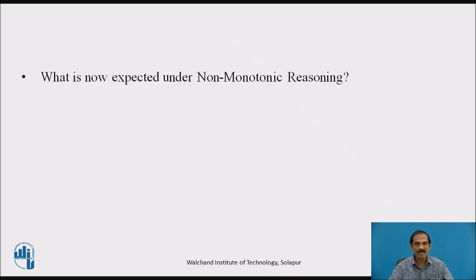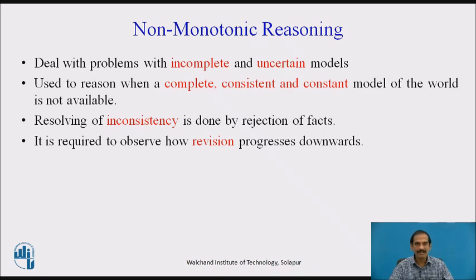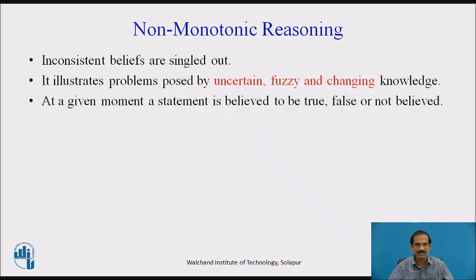Non-monotonic reasoning deals with problems with incomplete and uncertain models. They are used to reasonably establish complete, consistent and constant models of the world which are not available. We resolve inconsistencies and this is done by rejection of facts. It is required to observe how revision progresses till reasoning is established. Inconsistent beliefs are singled out and separated. It illustrates problems posed by uncertain, fuzzy and constantly changing knowledge.